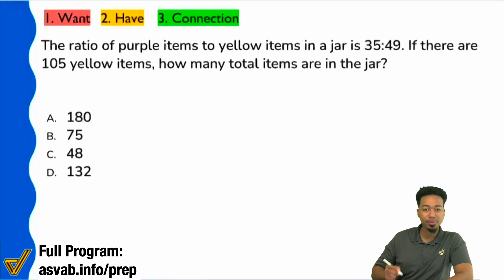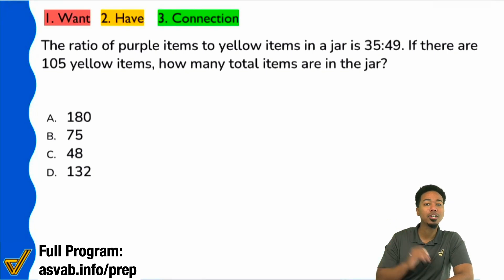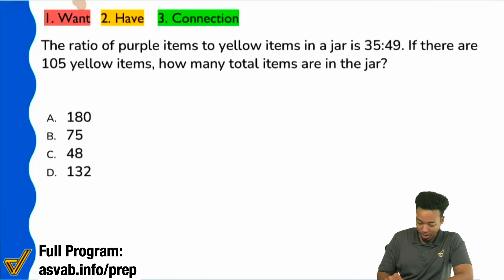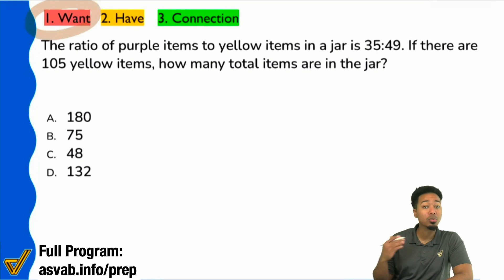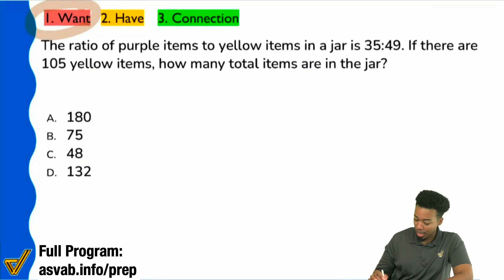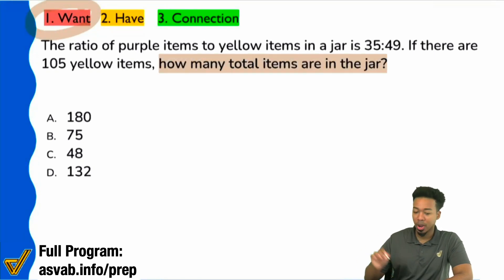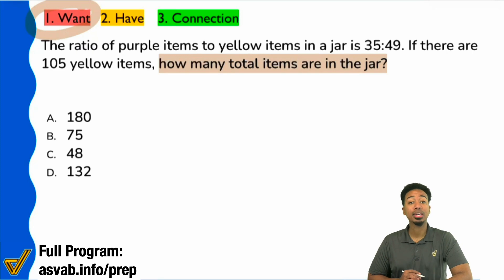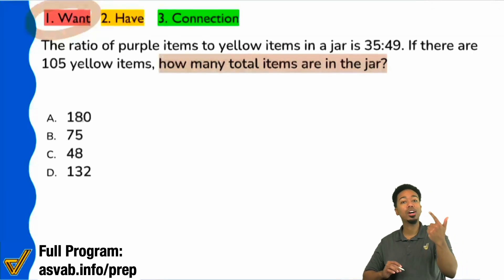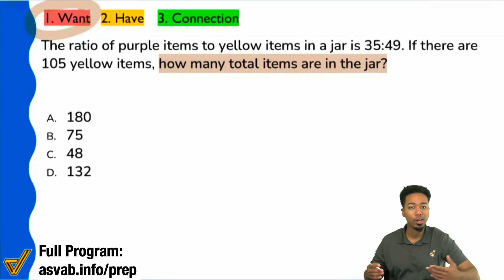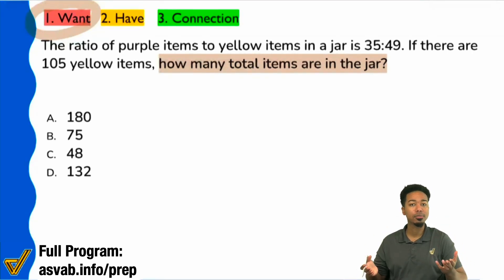First things first, as always, everybody, read the question. As always, no matter what, what is it that we want — that's our priority, and we can always find that right there. The who, what, when, where, how many, which of the following — that's always where you want to look first.